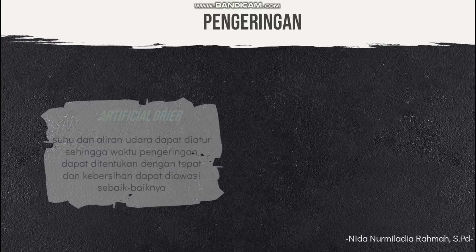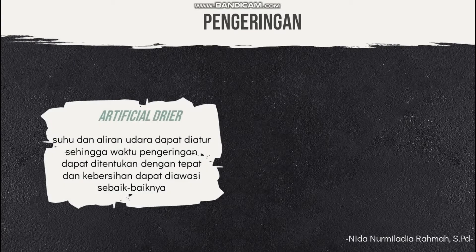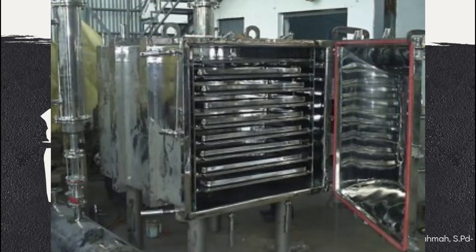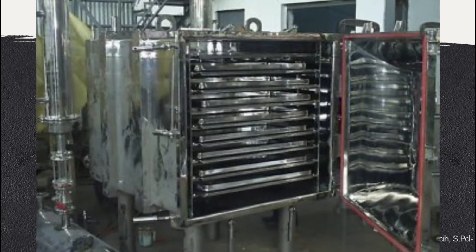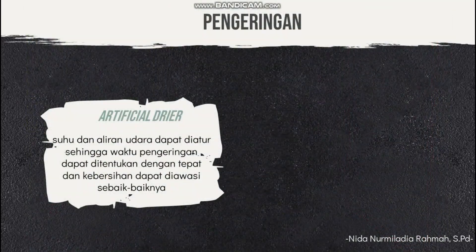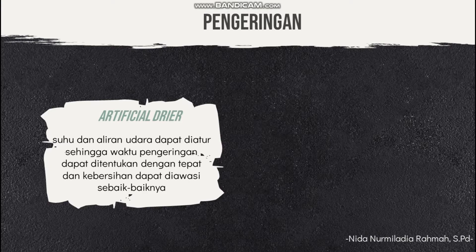Pengeringan bisa dilakukan dengan dua cara. Yang pertama itu artificial dryer — dari katanya, artificial berarti buatan atau tiruan, jadi pengeringannya menggunakan suatu alat pengering. Pengeringan buatan ini mempunyai keuntungan karena suhu dan aliran udaranya bisa diatur, sehingga waktu pengeringan bisa ditentukan dengan tepat dan kebersihannya bisa diawasi dengan sebaik-baiknya.